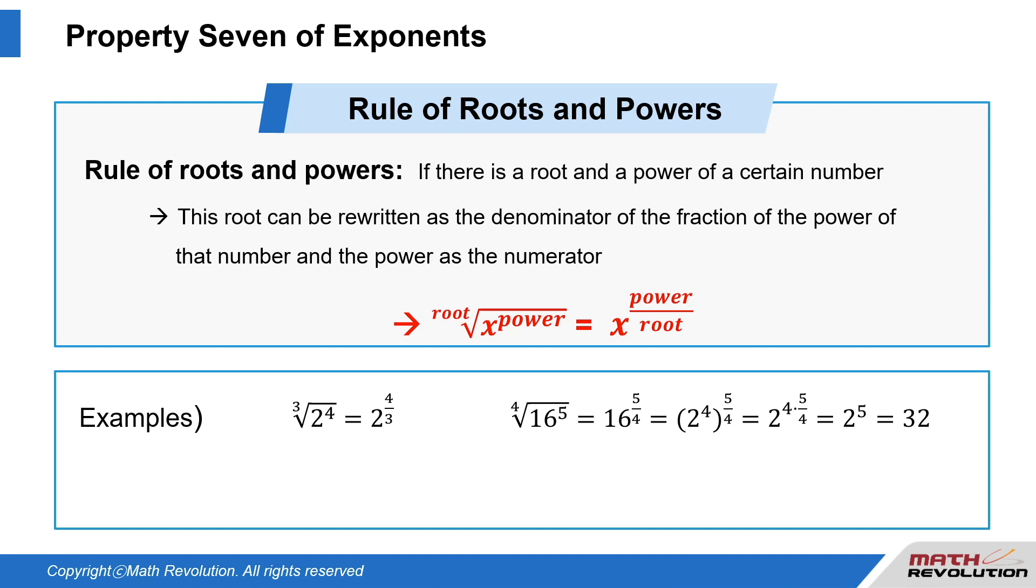4th root of 16 to the power of 5 is equal to 16 to the power of 5 over 4, which is equal to 2 to the power of 4 to the power of 5 over 4, which is 2 to the power of 4 times 5 over 4. That becomes 2 to the power of 5, which is 32.